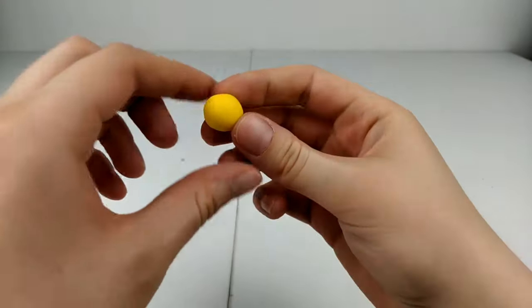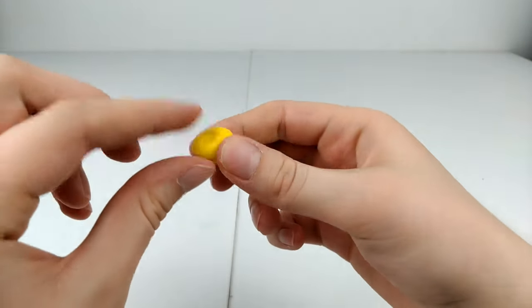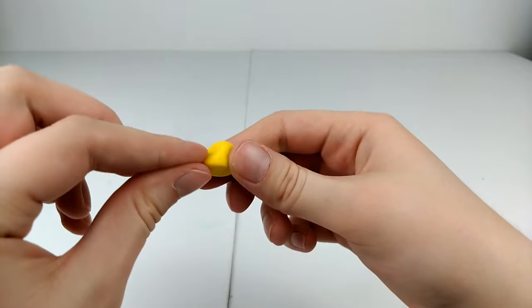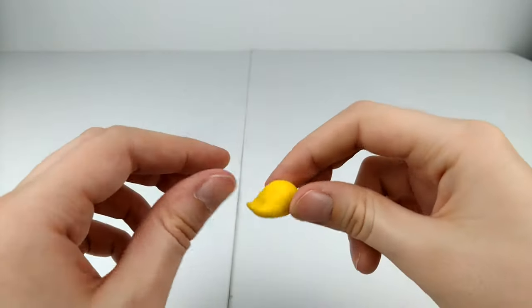Moving on to the duck, let's start with a ball of yellow clay and pinching the end into sort of a teardrop shape and flip it up at the top.